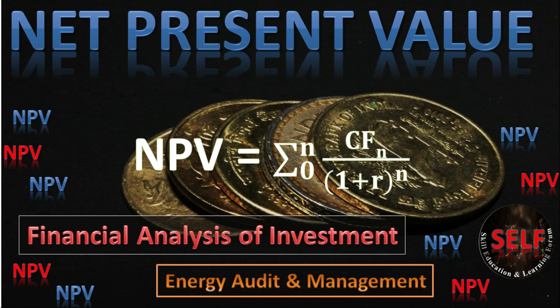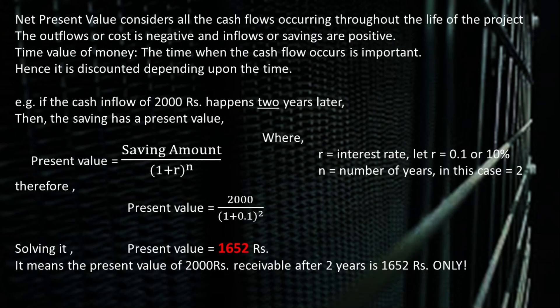Net Present Value. While comparing various projects for their profitability, we check various criteria like SPP, ROI, and NPV. NPV is Net Present Value. Net Present Value considers all the cash flows occurring throughout the life of the project from the very beginning. In Net Present Value, the outflows or cost is considered negative while inflows or savings are considered as positive.